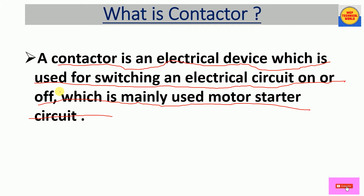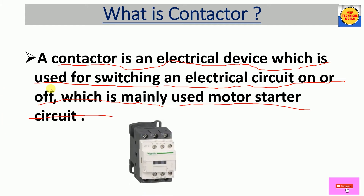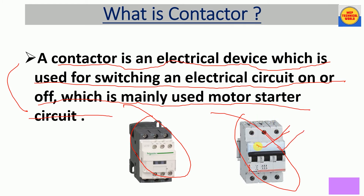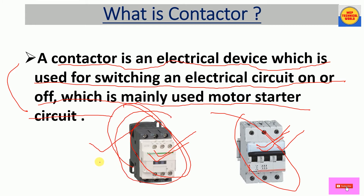Here we have a contactor and this is an MCB. Why do we use this contactor instead of an MCB? If we talk about MCB, we can only operate it manually. However, we can operate this contactor automatically by controlling the contactor coil supply. That's why we use the contactor in motor starter circuits.